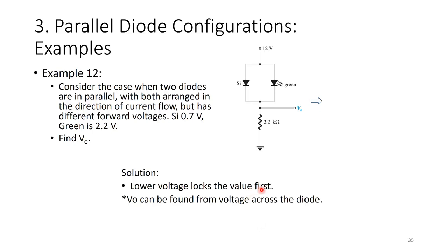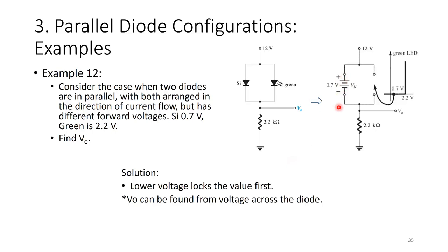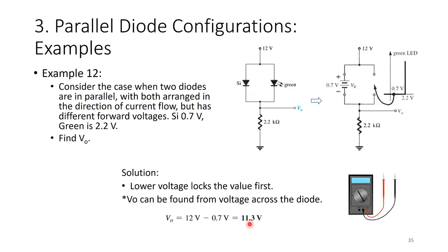So the lower voltage wins and Vout can be found from the silicon diode voltage. KVL gives: 12 minus Vout equals 0.7, so Vout equals 11.3 volts. With a multimeter measuring from Vout to ground you'd see 11.3 volts; measuring across the silicon diode you'd see 0.7 volts.